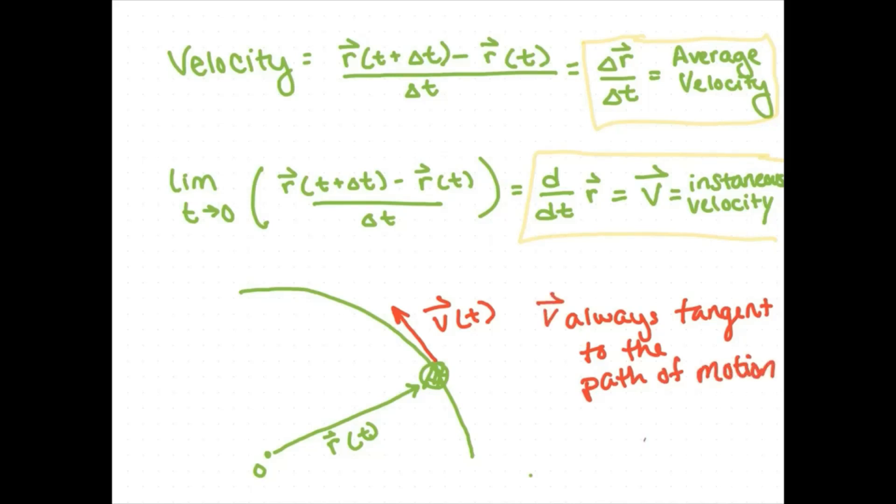Then we can ask, what is speed? Speed is simply the magnitude of the velocity. The magnitude is the square root of the sum of the squares of the components. That is how you take the magnitude of any vector.